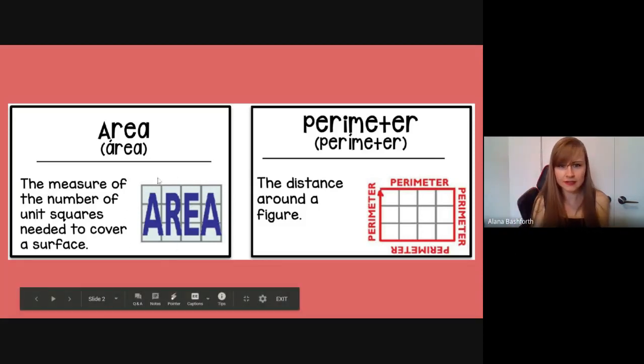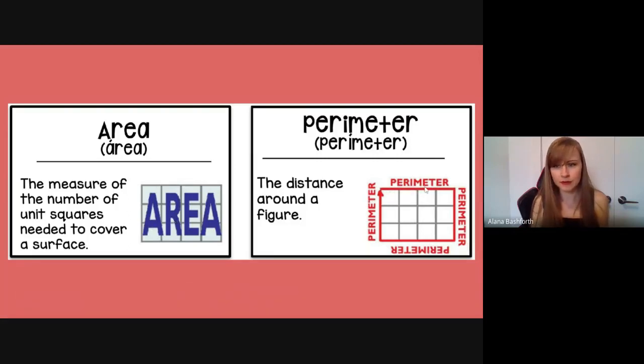So the area on this rectangle is 12. And then the perimeter, if you count it up, all of the edges would be 14.